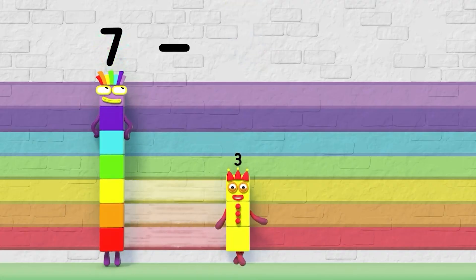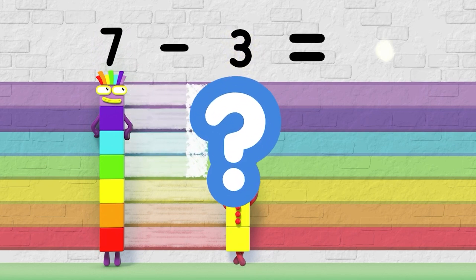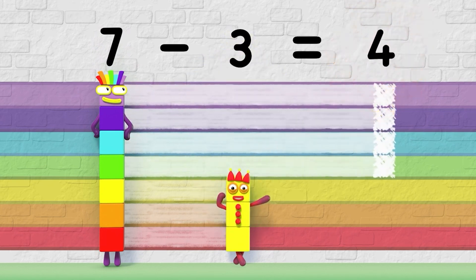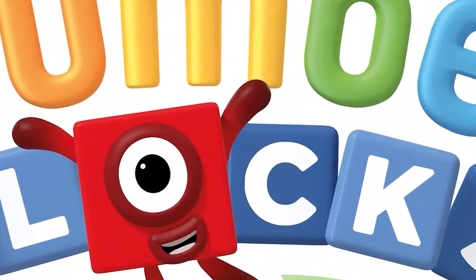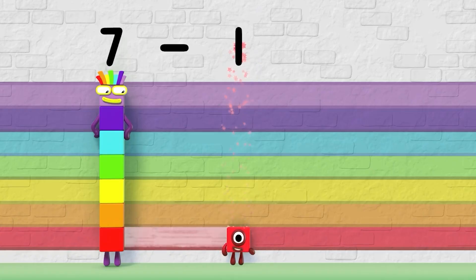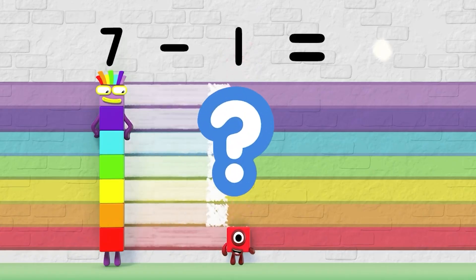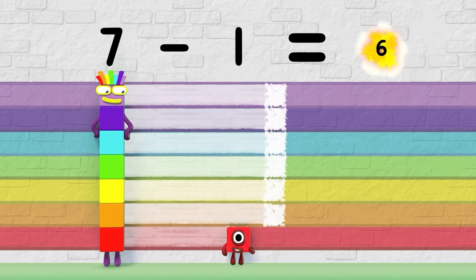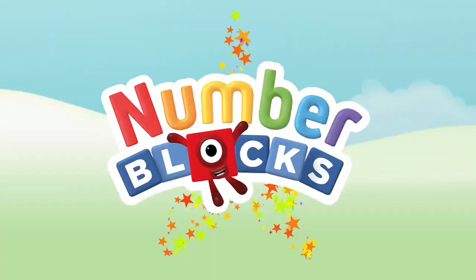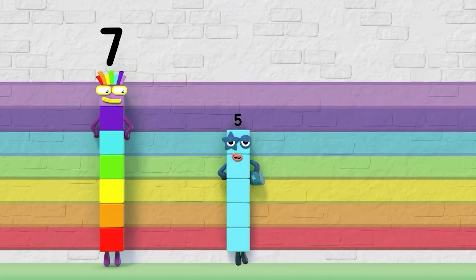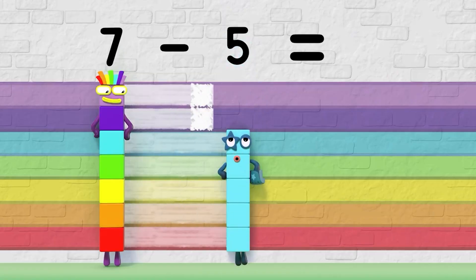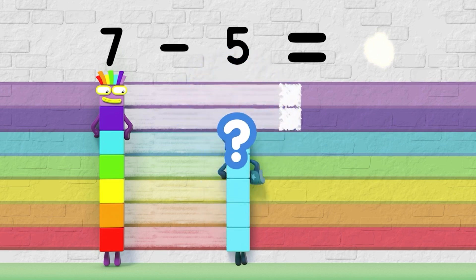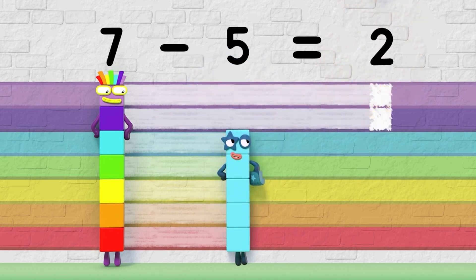Seven minus three equals four. That's the difference. Seven minus one equals six. That's the difference. Seven minus five equals two. That's the difference.